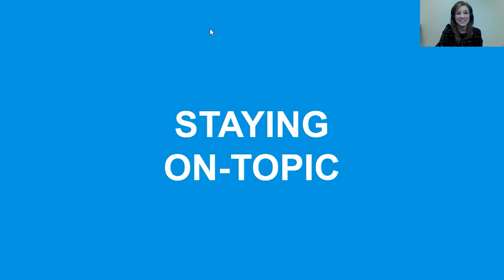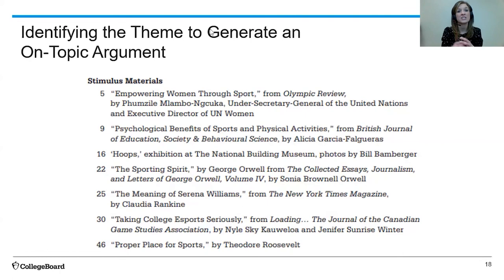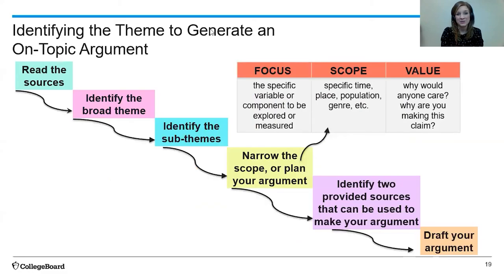Now, the next step as we start reading the stimulus material is to make sure we are staying on topic. As you progress through these next videos with Mr. Gonzalez and myself, you're going to be reading the sources on screen. As you read those sources, start thinking about what they are authentically talking about and what connections you can see between individual sources. You can look at the collective — what connections exist between all seven — or what connections do you see within two or maybe three sources. Remember it all starts with reading the sources, then identifying the big theme connecting all sources, and then identifying sub-themes connecting two or three. Narrow your scope, identify sources that can be used in your argument, and work to draft your argument.